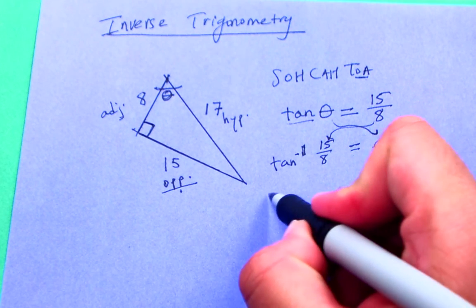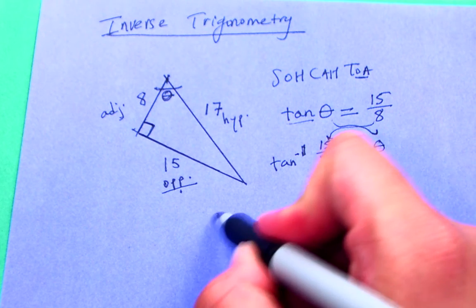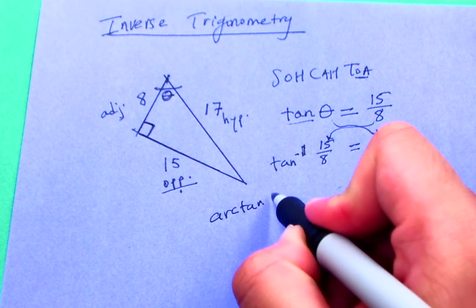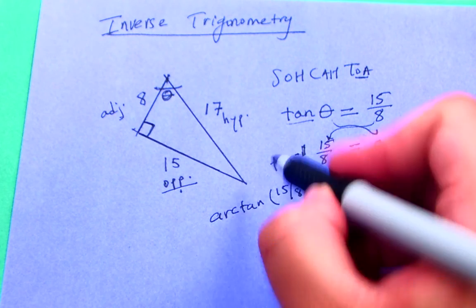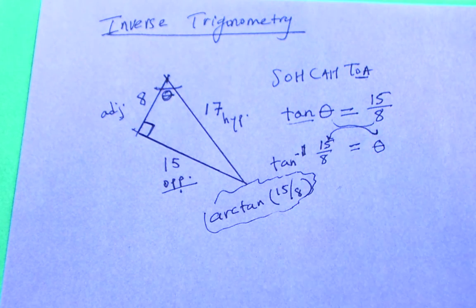So tangent, inverse tangent rather, of 15/8 is something I can quickly calculate. You also sometimes see this, just so you're aware of it, as arc tangent. So you can also see it as arc tangent 15/8. Same thing, just so you're aware of that.